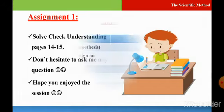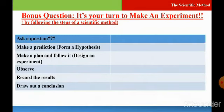Finally, it's activity time and it's a bonus question. It's your turn to make an experiment by following the six steps of a scientific method. Don't forget to ask a question, make a prediction to form a hypothesis, make a plan and follow it, and you are designing an experiment.